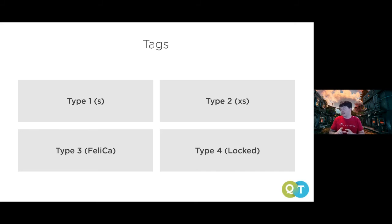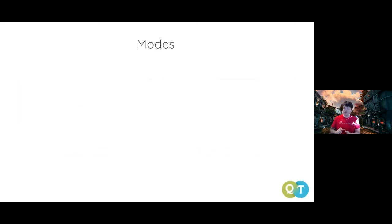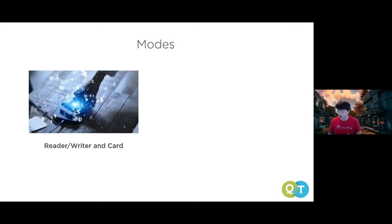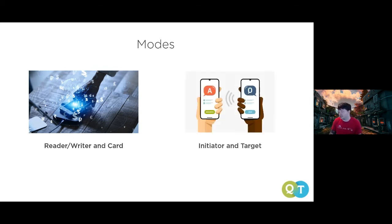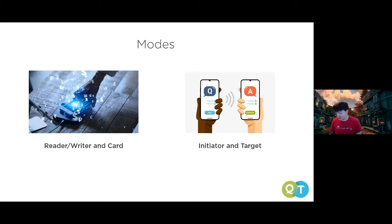There are two modes. Reader/writer and card mode is what you see with tap-to-pay: one device reads, the other writes, communicating in one burst of information. The more advanced initiator and target mode allows two NFC devices to alternate reading and writing, enabling a full two-way conversation with surprisingly high throughput for data transfer.